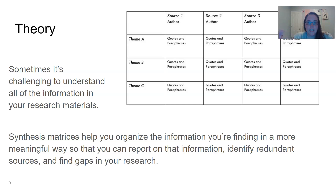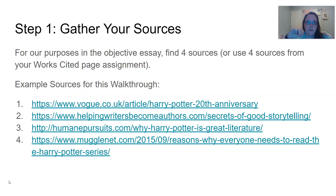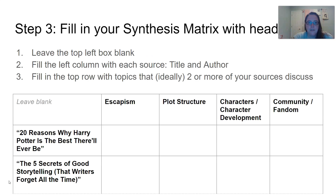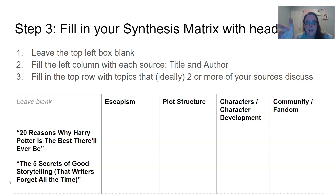In order to create this synthesis matrix, first gather your sources. I've got these examples here — you can always click on these links later. Then create your synthesis matrix table, fill in your top row, and fill in your left column. What I put in my top row were the different themes or topics that my sources were talking about. I'm starting in column two because I need column one for my sources. In my top row column two, I have the topic of escapism. If you weren't paying attention, I picked Harry Potter as my subject — why is Harry Potter amazing and great and awesome? That's what I would want to argue.